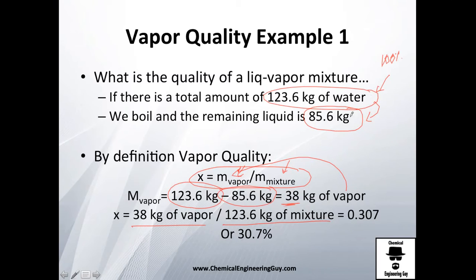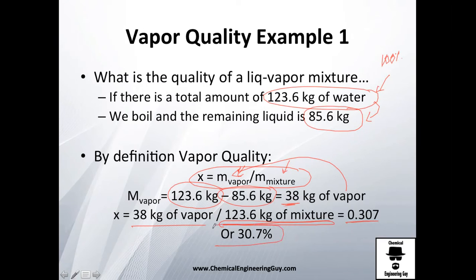We're supposing this 123.6 kilograms is the total amount of water, and we boiled about 38 kilograms of it. Doing the division, you get 0.307, or 30.7 percent — essentially about 31 percent, or one-third of the mixture, is vapor.